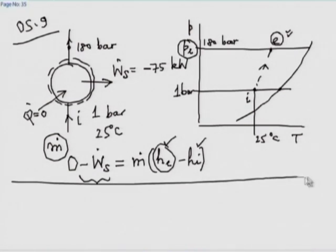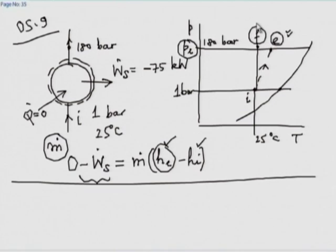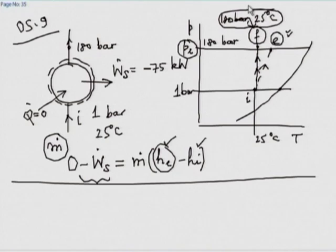Second part of OS 9: the ideal pump is defined as one that does the pumping isothermally. So assume the exit state is 180 bar and 25°C, determine the power required for that ideal process, and the ratio of ideal power to actual power (75 kW) gives the pump efficiency.